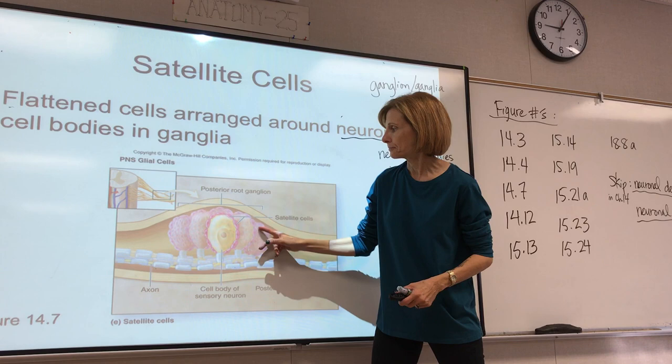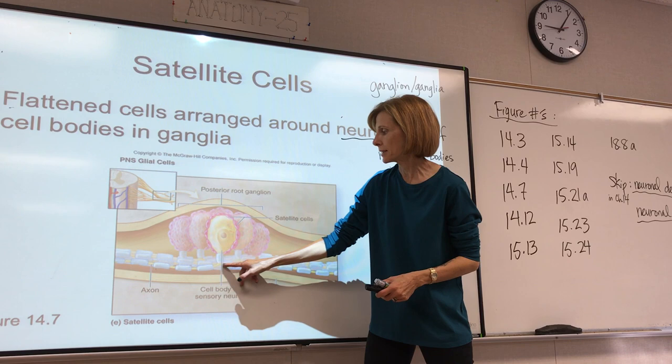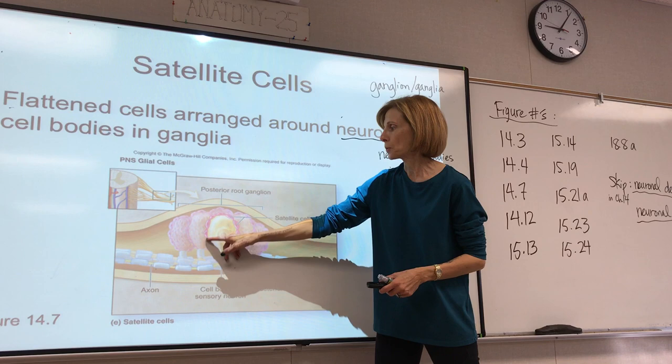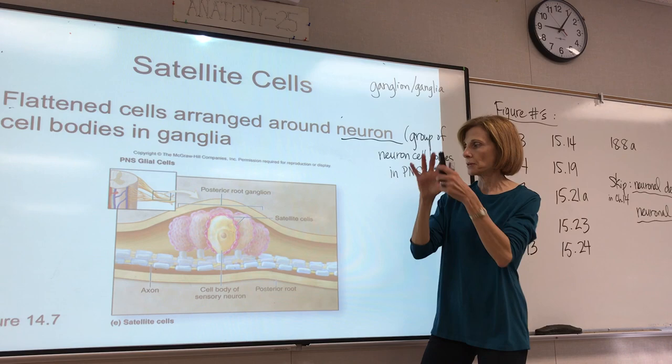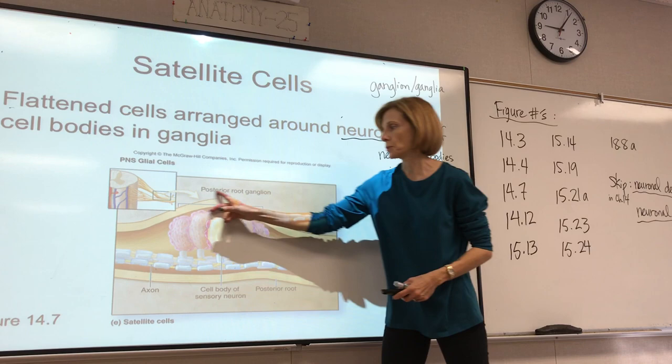This is a bunch of neuron cell bodies — the things shown in yellow. Notice these are unipolar neurons — one process attached to the cell body. You can see these little pink cells around the neuron cell bodies; those are the satellite cells, kind of protecting those cell bodies. This whole structure — this bundle of neuron cell bodies — is the ganglion.